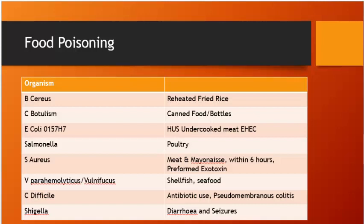Food poisoning summary: Bacillus cereus — reheated fried rice; Clostridium botulinum — canned foods, floppy baby; E. coli O157 — HUS from undercooked meat; Salmonella — from poultry; Staph aureus — meat and mayonnaise, from preformed exotoxin, symptoms within 6 hours; Vibrio parahaemolyticus/vulnificus — shellfish; C. difficile — antibiotic use (ampicillin/clindamycin), pseudomembranous colitis, treat with metronidazole or vancomycin; Shigella — diarrhea with seizures.